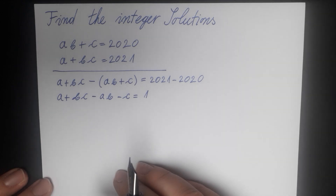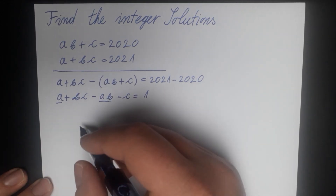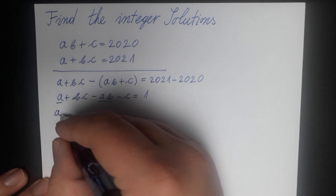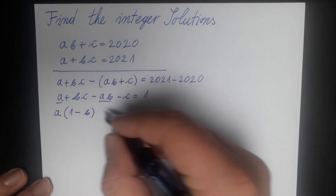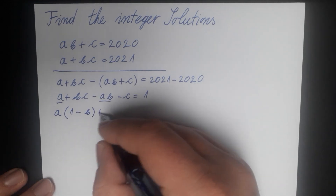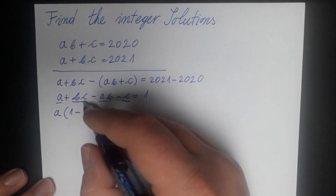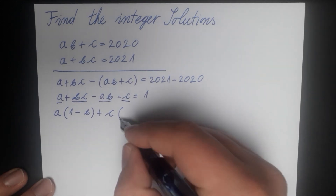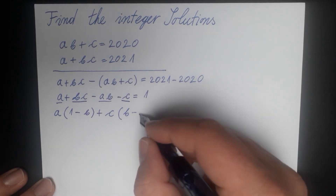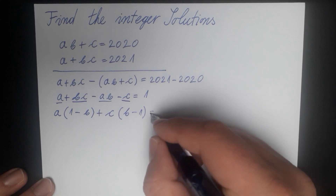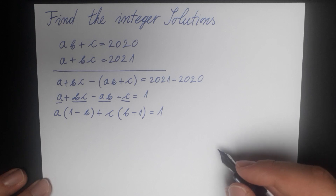Let's now combine these terms. We see that a is in common in two terms, so we can write a times (1 minus b) from the first and second terms. From the second and fourth terms we see that c is in common, and we have b from one term and negative 1 from the other, giving us c times (b minus 1), equal to 1.